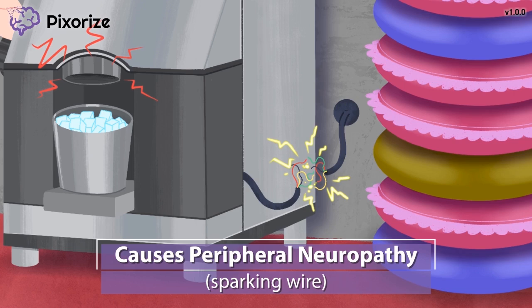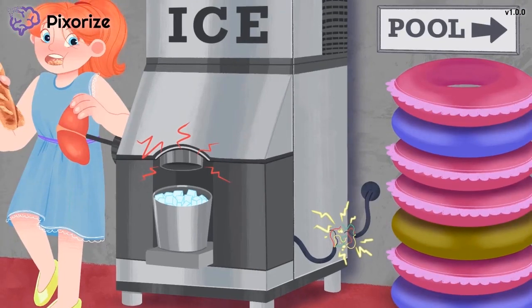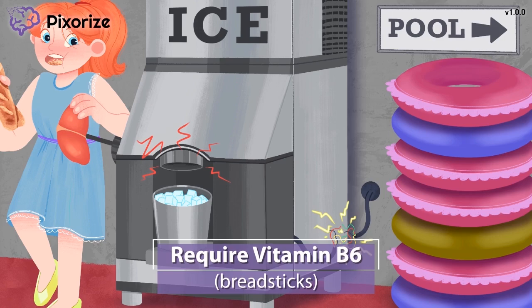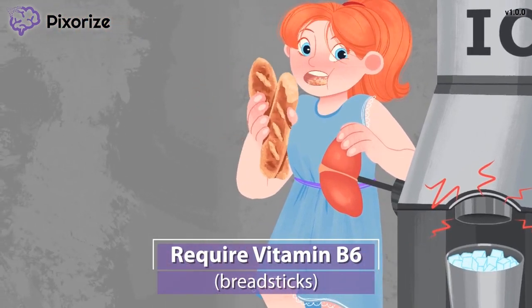Isoniazid can cause peripheral neuropathy, which often manifests as tingling in the extremities. This neuropathy is caused by a deficiency in vitamin B6, since isoniazid interferes with vitamin B6 in the body. This woman grabbed some breadsticks to snack on while she filled the ice bucket. These breadsticks are here to remind you of vitamin B6 — breadsticks, for B6.